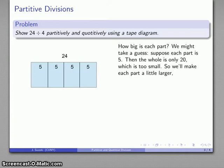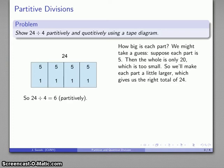So I'll increase the size by one more, so that's 20, 21, 22, 23, 24. This is everything. And so each of these parts is a 5 and a 1, so each of those parts represents a 6. And so there's my partitive division.